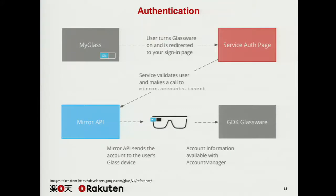Also, if you're building an application, you probably want to show some user-specific content — for example, his points, his name, his rank. Luckily, there's an authentication system. You can plug in your own authentication once the user installs the glassware application through MyGlass. Basically, your server will get some kind of user token, and then uses the Mirror API to create a new account on the glassware application, which can save your custom token and user data.